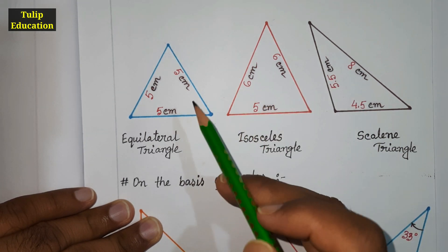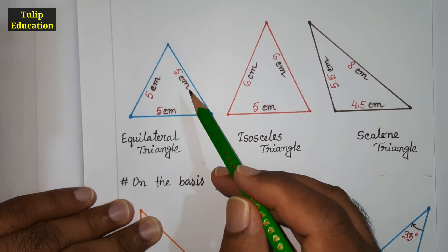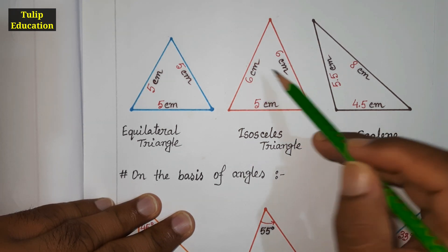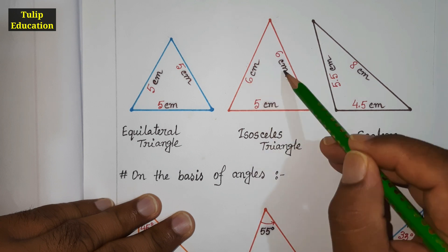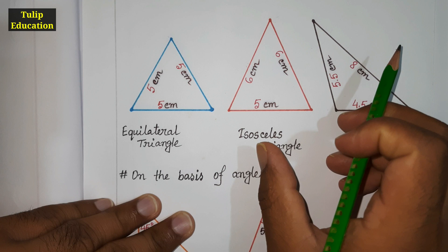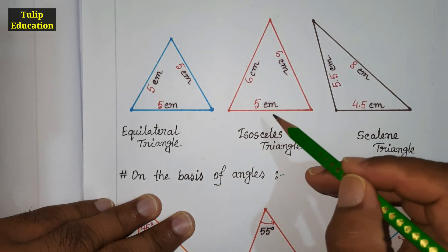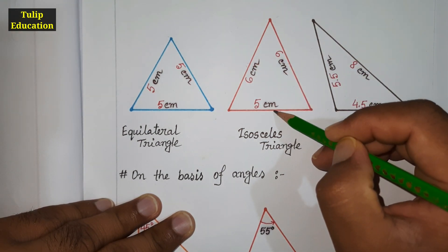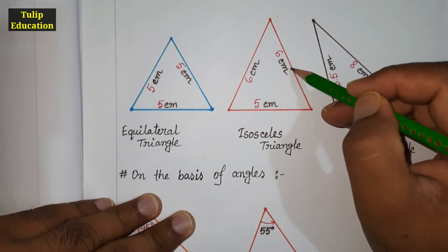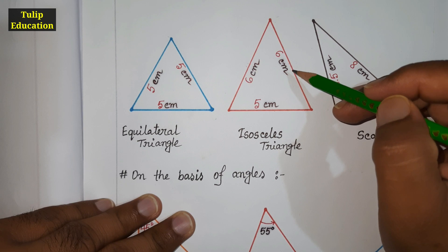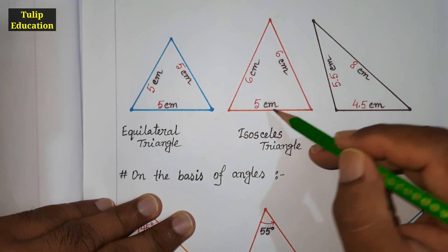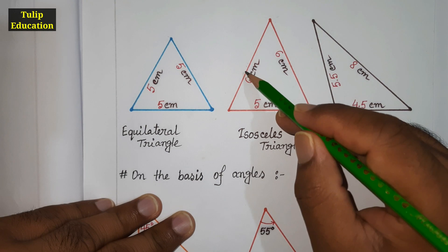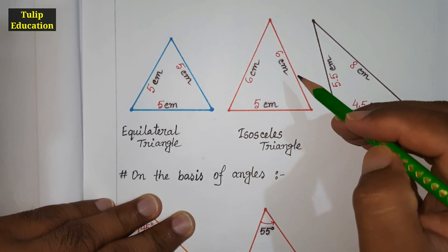In an isosceles triangle, any two sides are equal in length. This side and this side are six centimeters in length and the other one is five centimeters, so two sides are the same length — that is an isosceles triangle. This side and this side may be equal in length while this side is different, and that will also be an isosceles triangle. Similarly, if any two sides are equal and the third is different, it is an isosceles triangle.